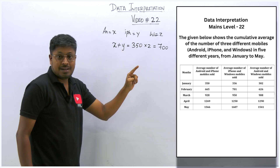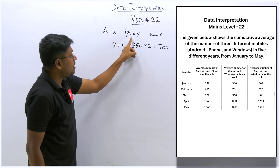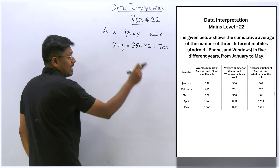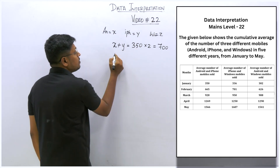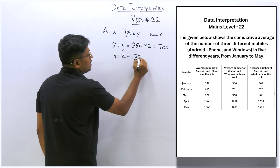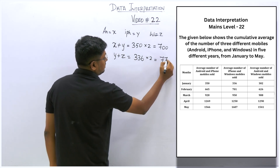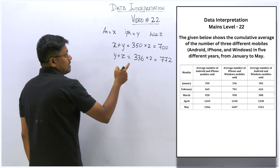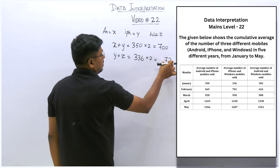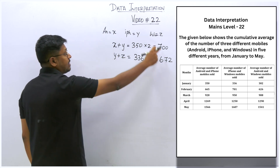Similarly we have to take all the remaining pairs. For iPhone and Windows: y+z, the average given is 336, so y+z equals 336 times 2, which is 672. So 672 is the total number of iPhones as well as Windows sold in the month of January.